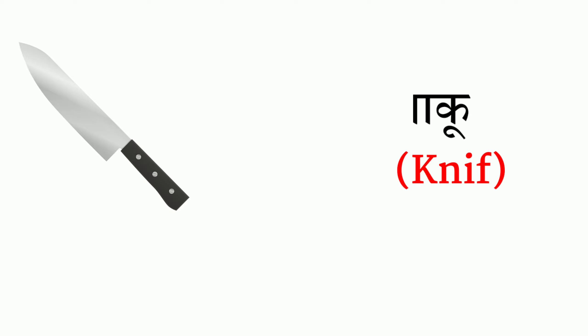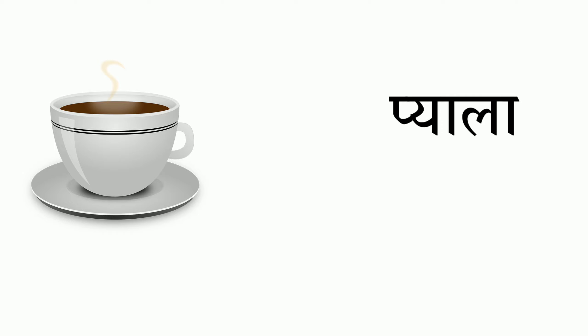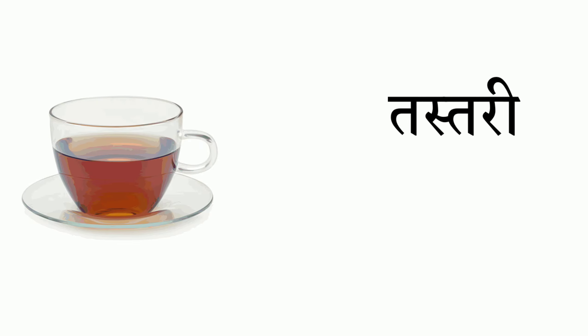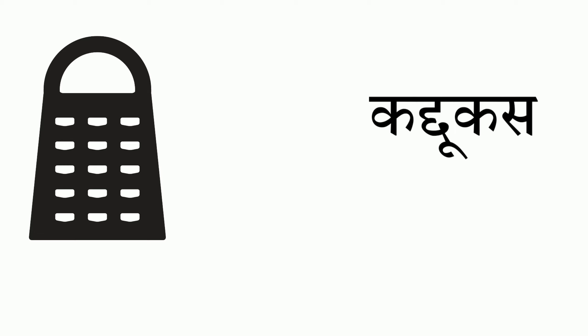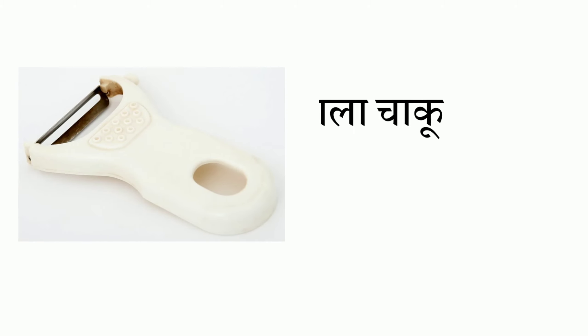Fourth we have chai dani — in English, teapot. Next we have knife, which you all know as chaku. Next we have tasteri — that's called saucer. Next we have kaddukas — that's called grater.